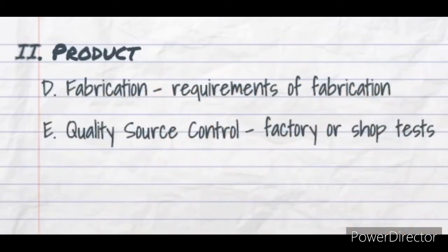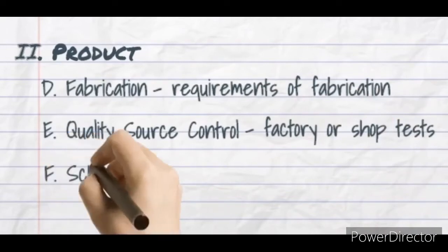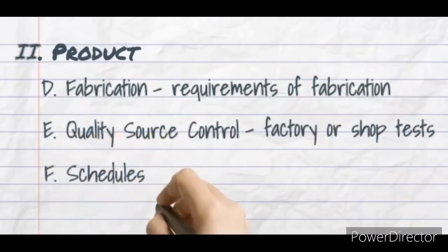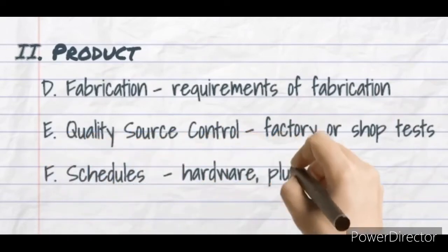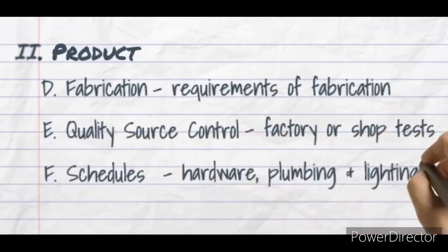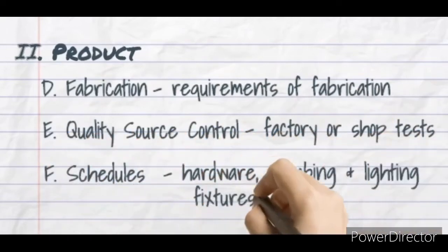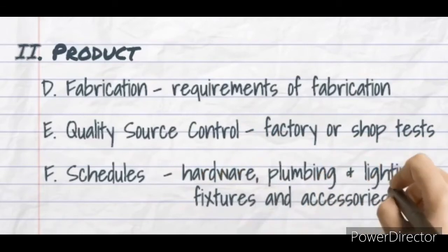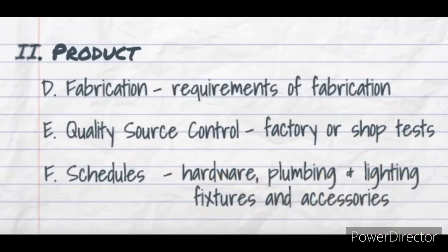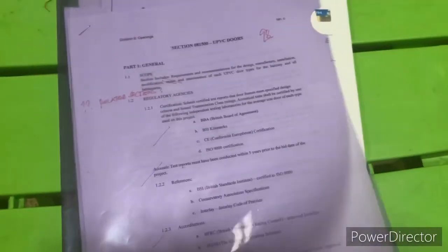Fifth is quality source control, where you input the factory tests or shop tests of the product. Sixth is schedules — more often this is placed under the specifications rather than in the drawings or plans. This is where you specify the hardware, plumbing, and lighting fixtures and accessories.